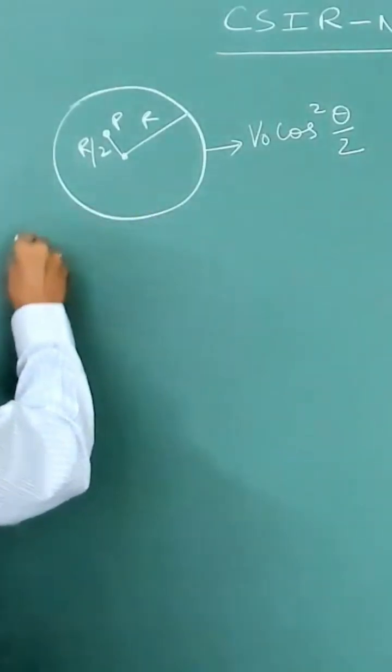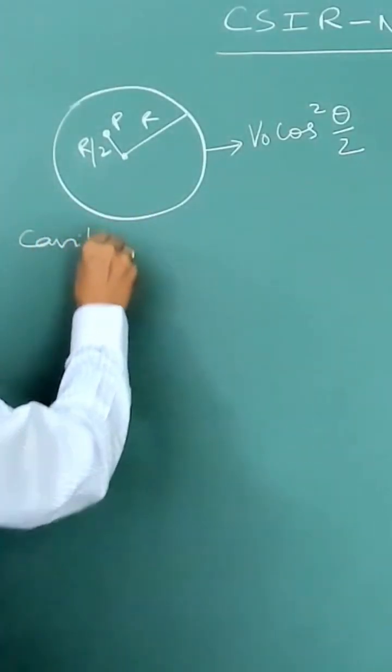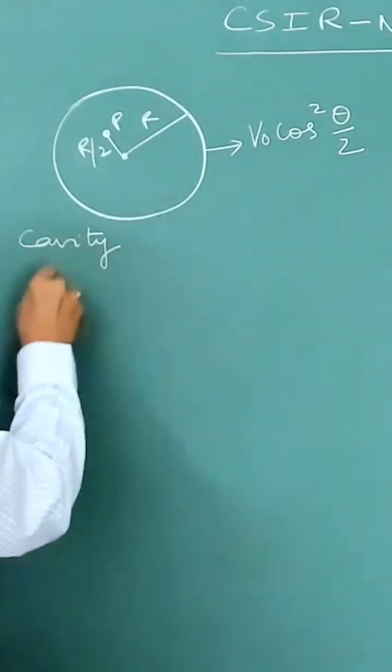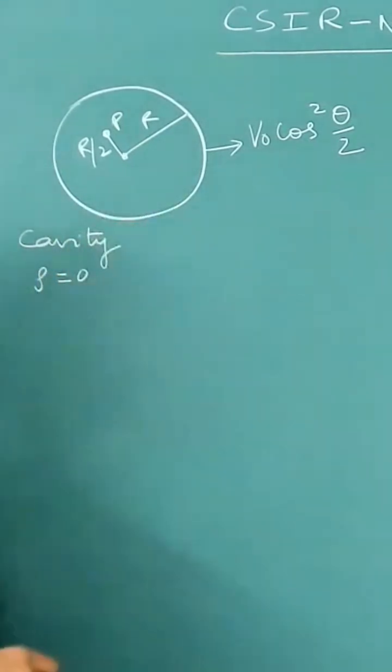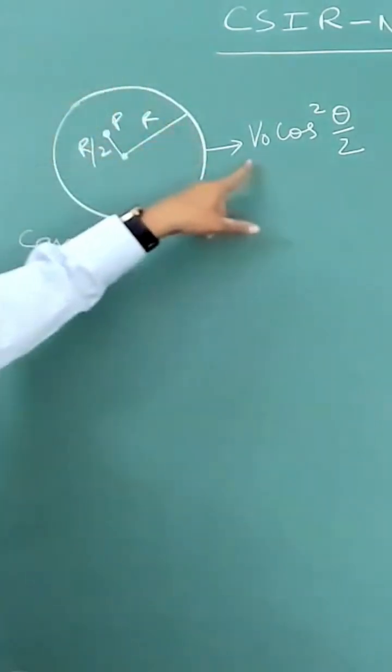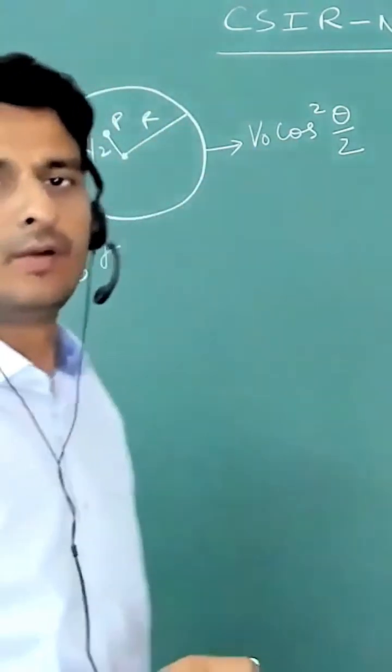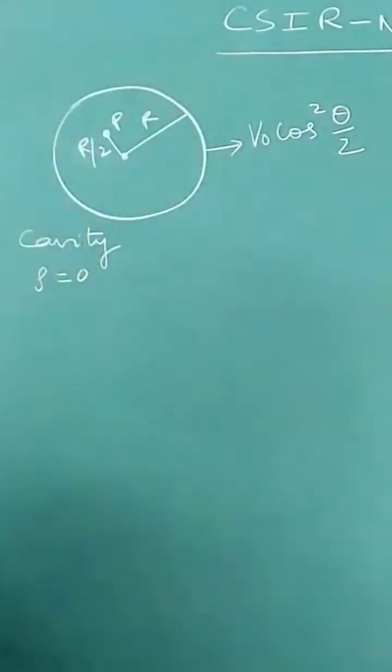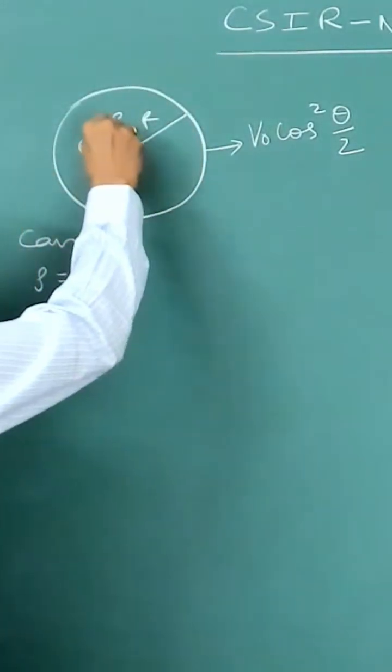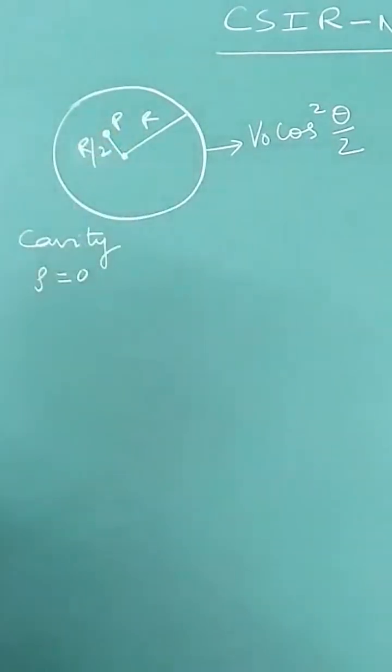The cavity, so this is a cavity, and which is a charge-free region. And at the boundary of this cavity, potential is given to be V0 cos squared theta by 2, and they want potential here at a distance r by 2.